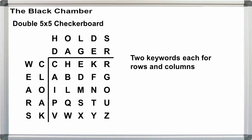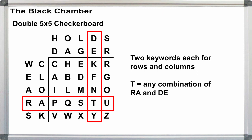Double 5x5. We used two 5-letter keywords for both the row and column keys. Encryption and decryption work the same way, but now we have 4 pairs of letters to pick from for each plaintext letter. This just makes solving a double 5x5 a little more challenging. We have wares and cloak for our rows keywords, and we have holds and dagger for our column keyword. In this case, T could be any combination of RA and DE, giving us RD, RE, AD, or AE. Conversely, for decryption, RD, RE, AD, and AE all translate to T.